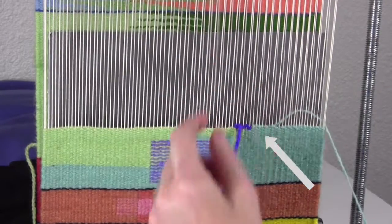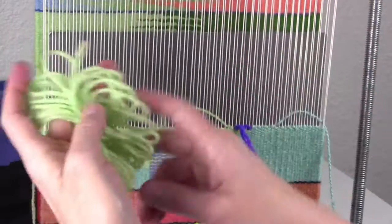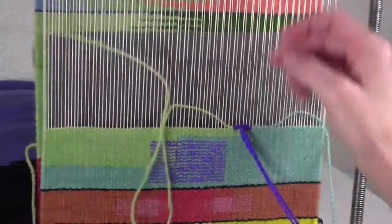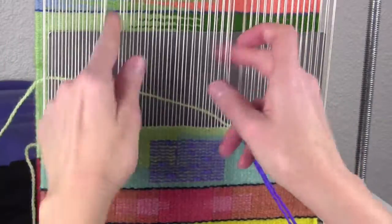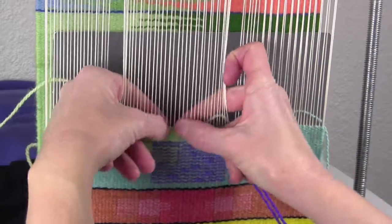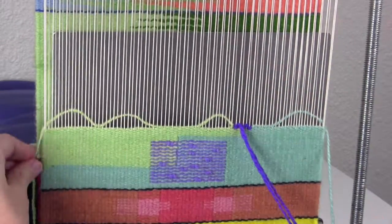Notice here how I'm pushing that weft straight across with my left hand. So in that area where the warps are spreading, I'm trying to get the weft to go straight across and that will start to pull them back together.